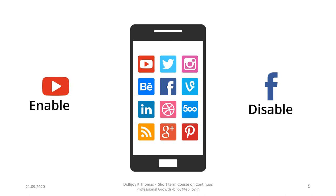We might have heard the terms enable and disable in the digital context. When do we use this term? For an app to work efficiently, we must enable its exclusive features — for example, options like allow locations, allow apps to access the information from our phone, etc.